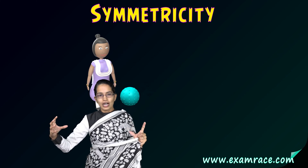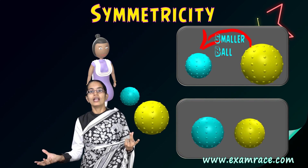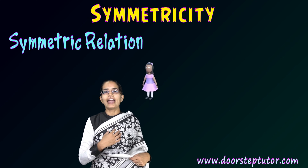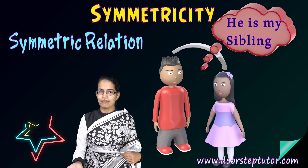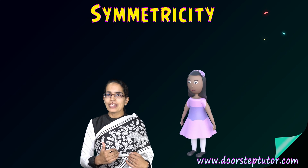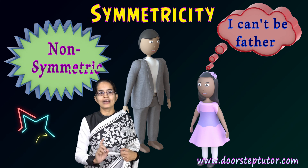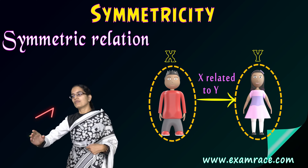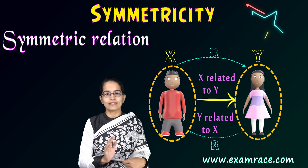The next is symmetricity. Let's say I have two balls and I try to relate them — this ball is smaller than that ball, or this ball is equal to that ball. A clearer example: I and my sibling. I am his sibling and he is my sibling — that is a symmetric relation. Symmetric relation means if x is related to y, then y is related to x with the same relation.